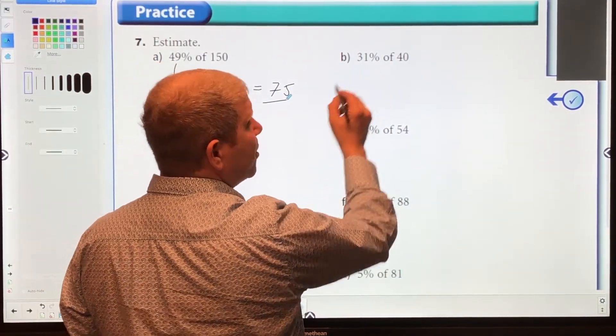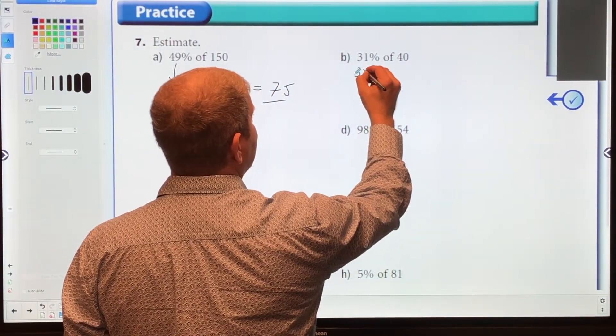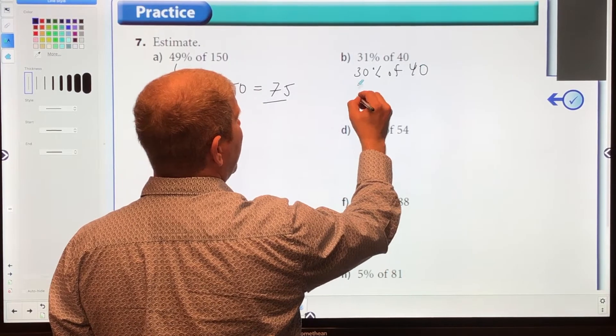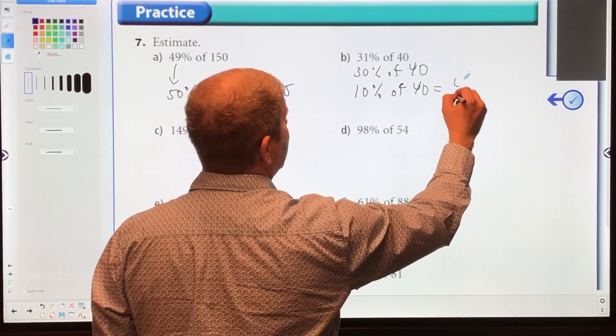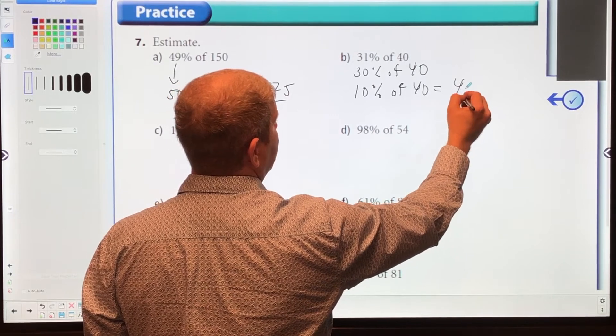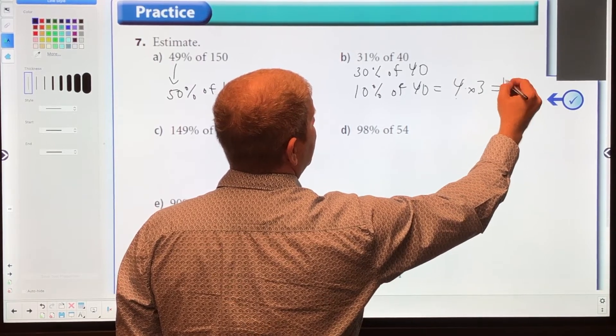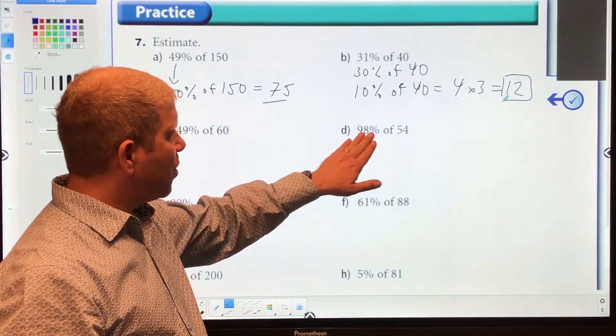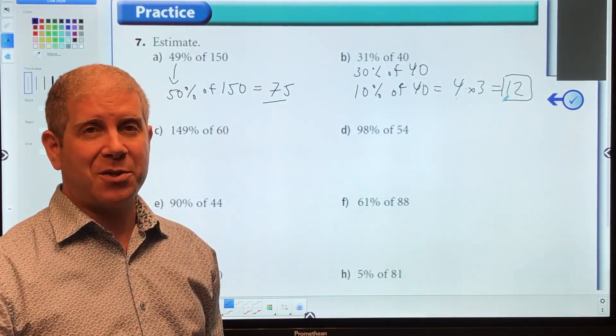Let's go to this one. 31% is not a friendly number, but 30% could be. So we're going to find 30% of 40. I'm going to break that down into three 10%s. 10% of 40 is 4. So 30% is going to be multiplying that by three, which equals 12. This is how you do mental math—you change these numbers, either the first or second number, or both, to make it a friendly number so you can find the answer.